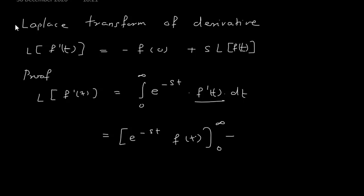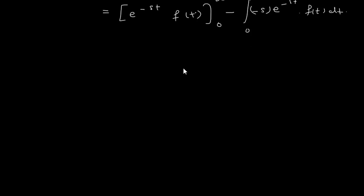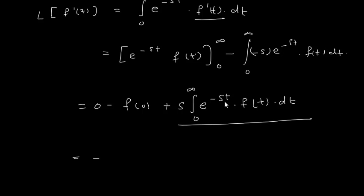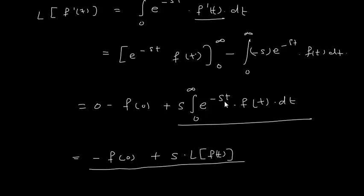The limit will be 0 to infinity, minus: I differentiate e^(−st), which gives minus s·e^(−st) into f(t) dt. Putting the limits: when I put infinity I get 0; when I put 0 I have f(0). The minus and minus give plus, and s is taken out, giving 0 to infinity of e^(−st)·f(t) dt, which is s·L{f(t)}. So we get minus f(0) plus s into Laplace of f(t). This is our formula for L{f'(t)}.